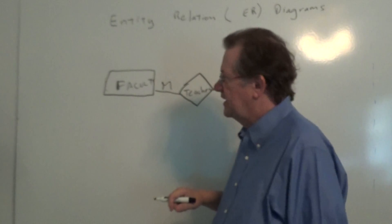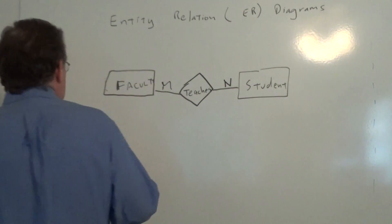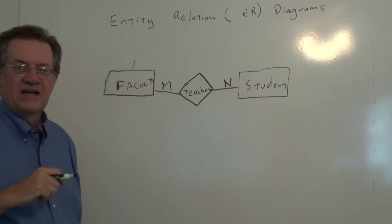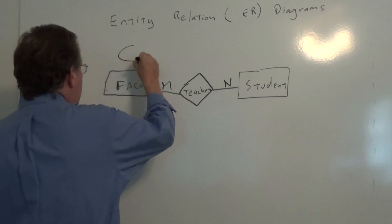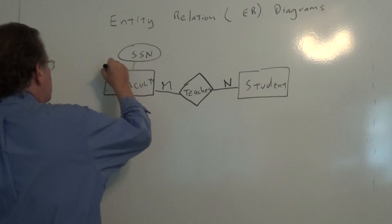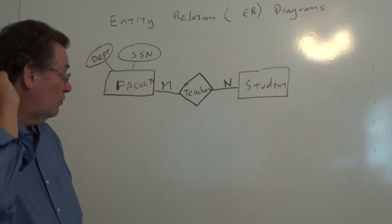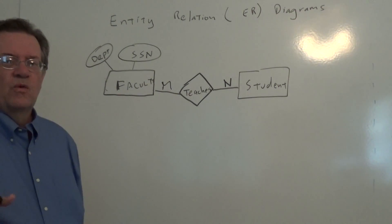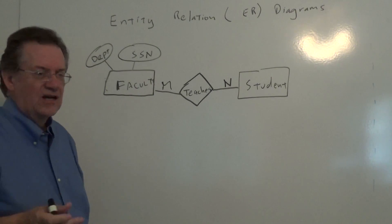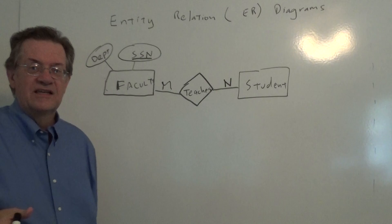The next thing we want to do is to specify the attributes for a particular entity. So let's say coming over here, we have faculty. And the way we specify attributes is with an oval shape. So let's say we have social security number for faculty. And we might also have department for faculty. Now we'll have more, but we'll start with those two for now. And one of the things we talked in a previous video about keys, the way we would specify a key for an entity is by underlining it. So in this case, we'll underline social security number, and we would say social security number is the key for the faculty entity.